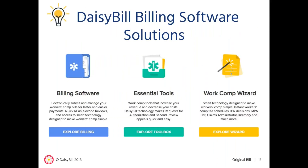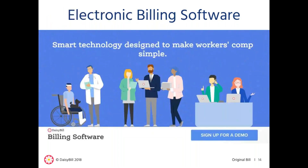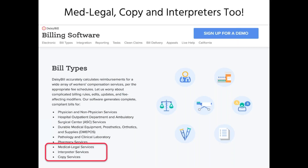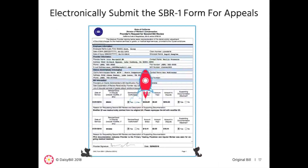Daisy Bill makes smart billing software to help people manage the complexities of workers' comp billing and payment. Workers' comp is challenging, and our software is designed to make workers' comp easier. We offer three software solutions. First is a complete end-to-end revenue cycle management system that electronically submits and tracks workers' comp bills. Daisy Bill electronically submits the CMS 1500 and UB04 forms, as well as the NCPDP form for pharmacy billing. We also electronically transmit medical legal bills, interpreter bills, and copy service bills. For all bills, Daisy Bill automatically completes the second bill review form and sends these appeals electronically as well.